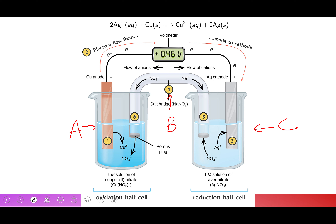If copper has a higher reduction potential than silver, there will be a difference in their potentials. Voltage is the potential difference across these two half-cells — one has a higher potential than the other, and the difference of these potentials is the voltage being measured.